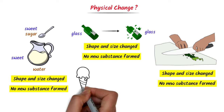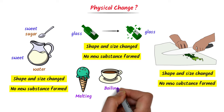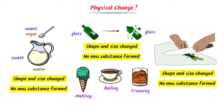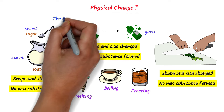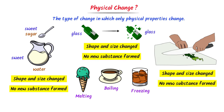Fourthly, remember these physical changes: melting, boiling, and freezing — these are all physical changes. Therefore, we define physical change as the type of change in which only physical properties of matter change, such as color, size, solubility, etc.